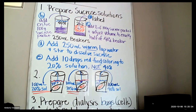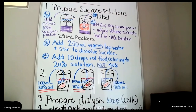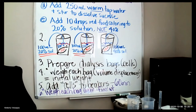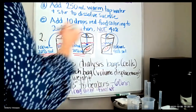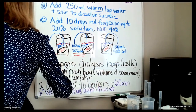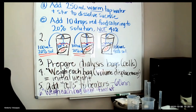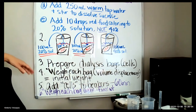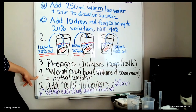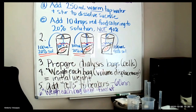Now you're going to prepare your dialysis bags, which I'll show you how to do in a minute. You're also going to weigh them, but not using a scale — instead using volume displacement, since most of you don't have a gram scale at home. You'll put water in a graduated cylinder, drop your pretend cell in to see how much water is displaced, and record that as your initial weight — really your initial volume displacement. Then add your cells to each environment, wait 60 minutes, pull them out, and weigh them again using the same method.